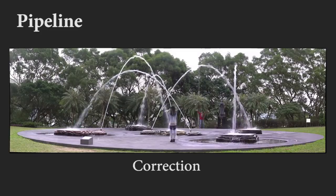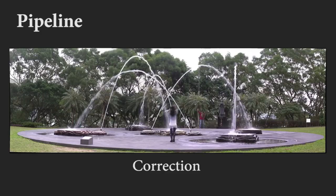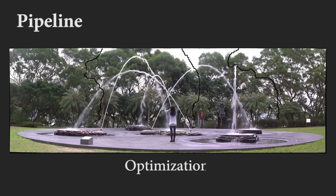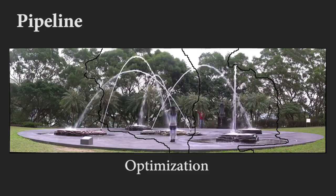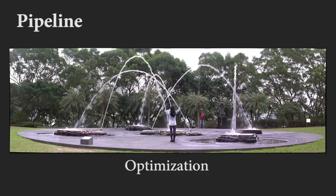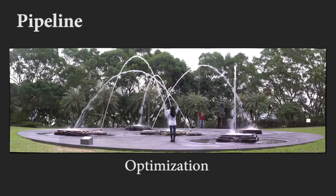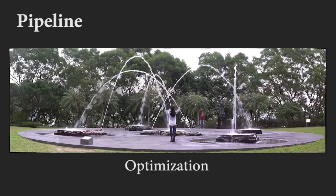Next, we apply vignetting removal and color correction to reduce artifacts at tile boundaries. Then we partition the panorama into multiple regions and perform the loop optimization out of core for each region. This also allows us to parallelize the process.